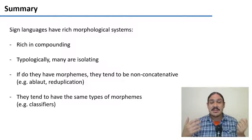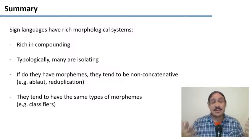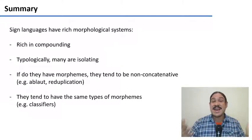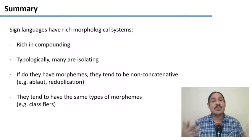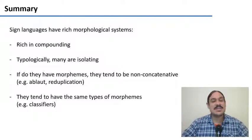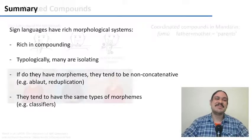In sign languages, words have many of the same types of morphemes. You can have aspect, you can have tense. And we're going to look at a very interesting example of how verbs in the German sign language can use classifiers.